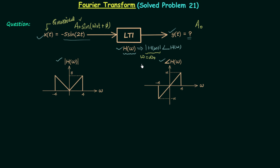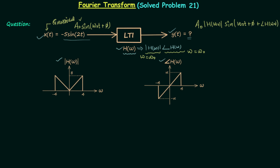Calculate the magnitude response at ω₀ and multiply it with the amplitude of the input to get the amplitude of the output: a₀ · |H(ω₀)| · sine(ω₀t + φ). The second change occurs in the angle — the output's angle becomes ω₀t + φ + ∠H(ω₀), where ∠H(ω₀) is the phase response at ω₀. This is the complete output expression for a sinusoidal input through an LTI system.